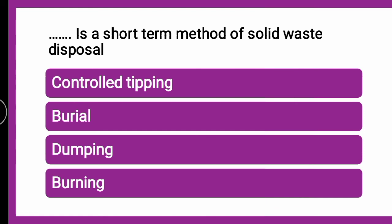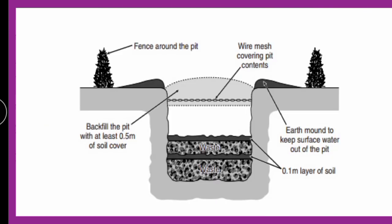The next question: Which is a short-term method of solid waste disposal — controlled tipping, burial, dumping, or burning? The correct answer is burial. The short-term method for solid waste management is the burial method. Like sanitary landfill, it involves alternating layers of waste and earth, but the trench dug is very small and is used for only a few days. In sanitary landfill, the trench takes months to fill completely. So burial is similar to sanitary landfill but is a short-term method.